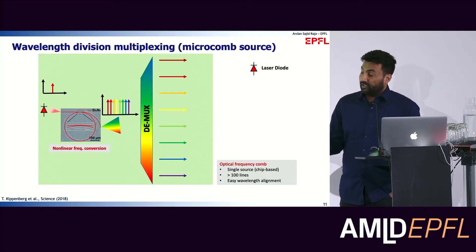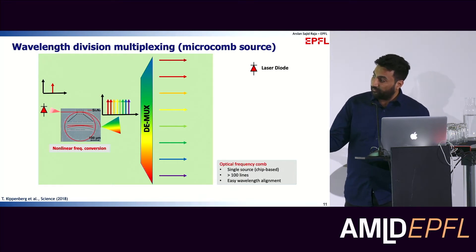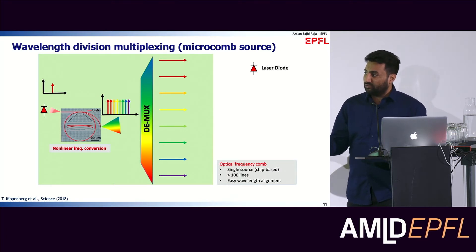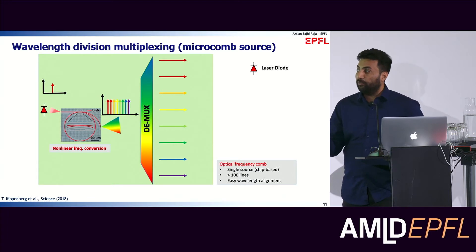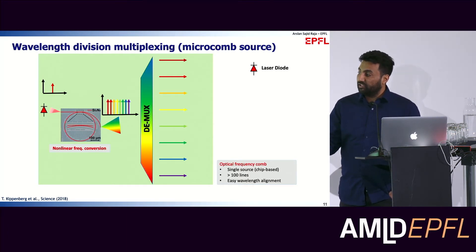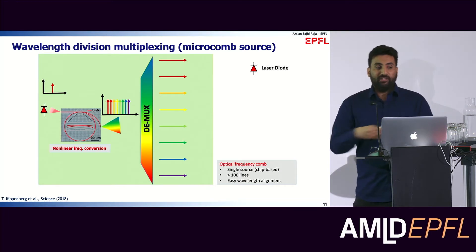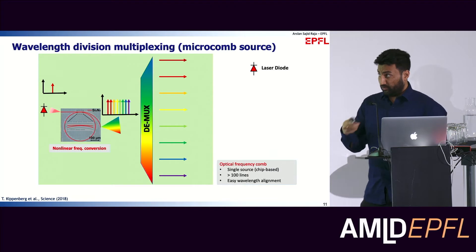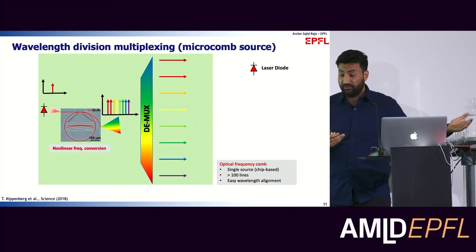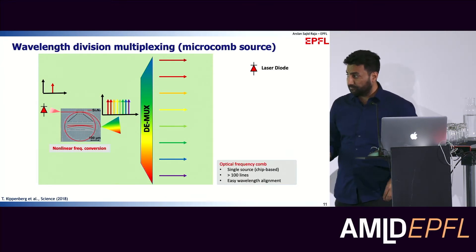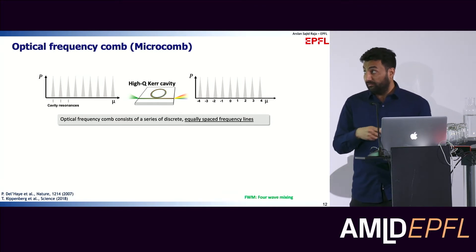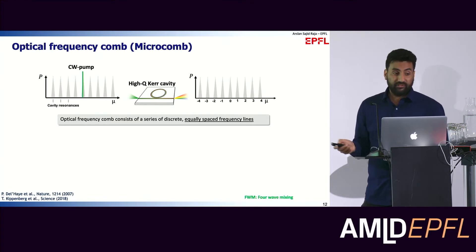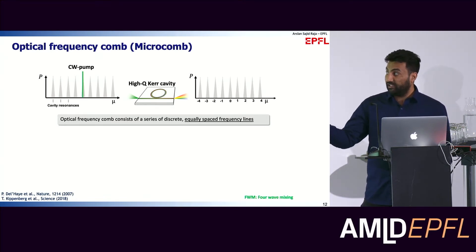A smarter approach is to use just one laser coupled to a very tiny device with a radius of 500 microns. Thanks to very high spatial and temporal confinement — meaning light traveling inside this circular structure doesn't lose too many photons — by using nonlinear frequency conversion, we can generate new colors of light. The advantages are: you only need one laser and a small chip, and you can get many colors from that one laser. We don't need 64 lasers to get 64 colors. There is also the advantage of very easy wavelength alignment, compared to 64 lasers where you need to adjust the temperature on each individual laser.